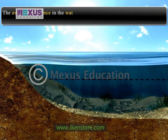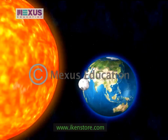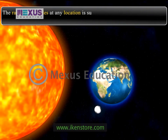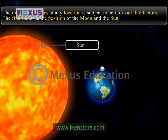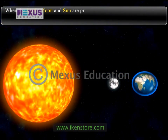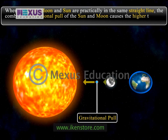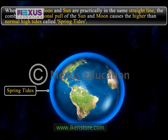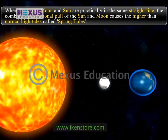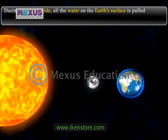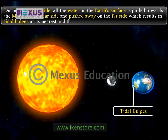The average difference in the water level between high and low tides at any place is called the amplitude or the range of the tide. The range of the tides at any location is subject to certain variable factors. The first factor is the position of the moon and the sun. When the earth, moon, and the sun are practically in the same straight line, the combined gravitational pull of the sun and moon causes higher than normal high tides called spring tides. Spring tides occur on full moon and new moon days, meaning these tides occur twice a month. During the spring tide, all the water on the earth's surface is pulled towards the moon on the near side and pushed away on the far side, resulting in tidal bulges at its nearest and farthest points.